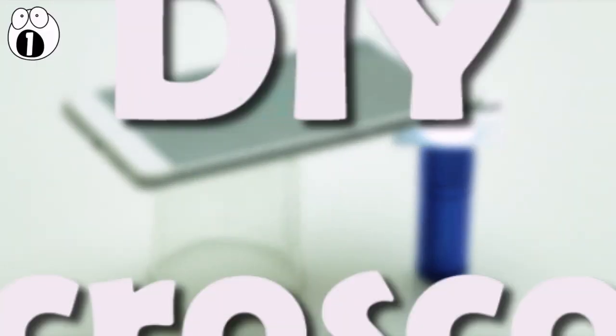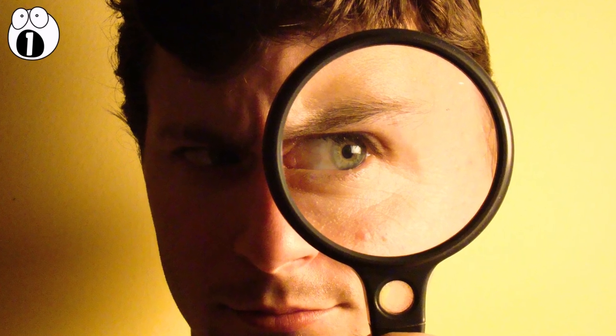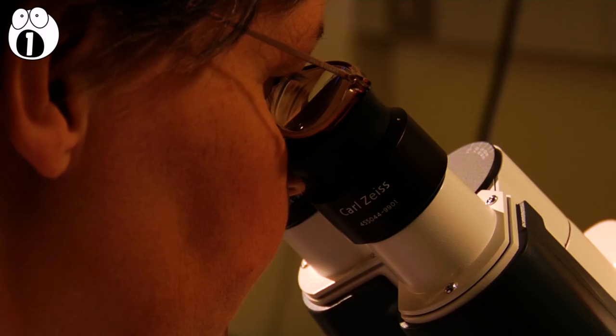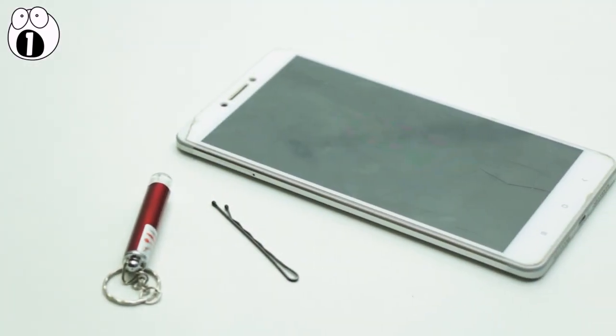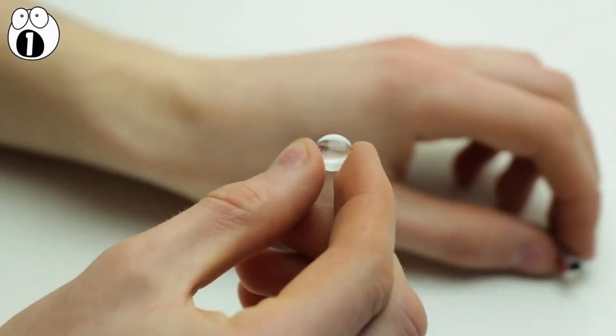Number 1: DIY Microscope. Have you ever wanted to really look at something, like see the very fine print or textures of small details? Well, you don't have to go to your local lab to do it anymore. All you need is an old laser pointer, a bobby pin, and your cell phone. Take apart the laser pointer and remove the lens.